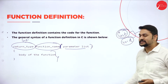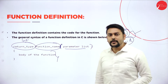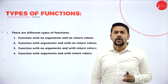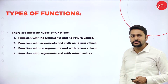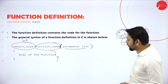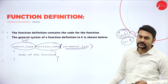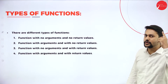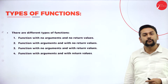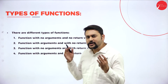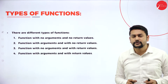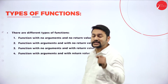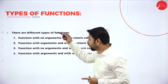Now you understand the syntax. The next important thing is the types of functions. Based on the return type and parameter list, I will be discussing the types of functions. How many different types do I have? I have four different types of functions. In fact, I have five — I have not mentioned the last one, which is recursion. So I have four different functions right now which I will be discussing.